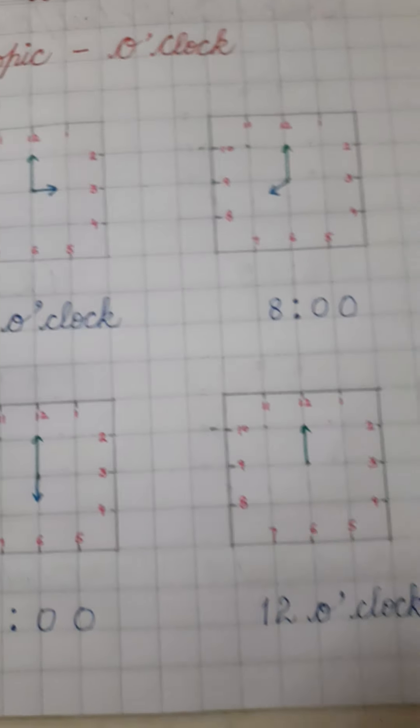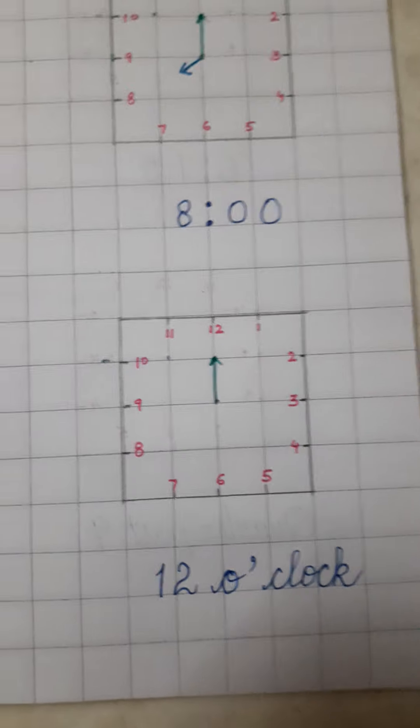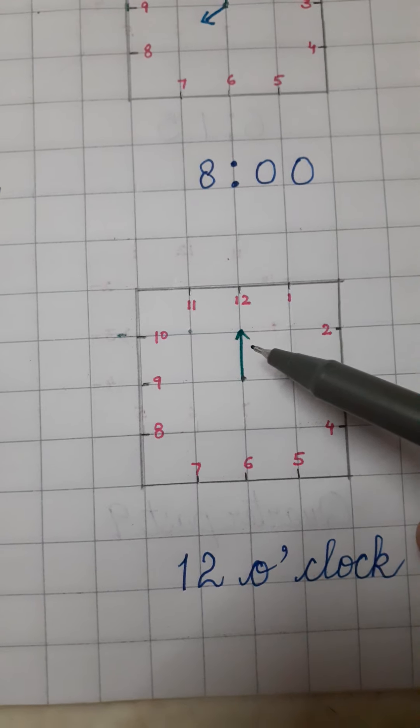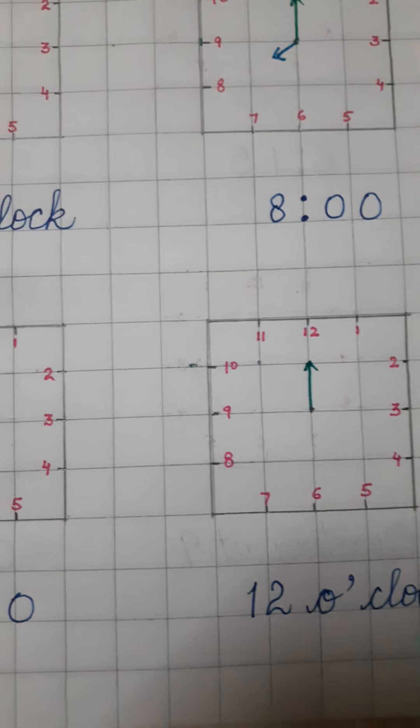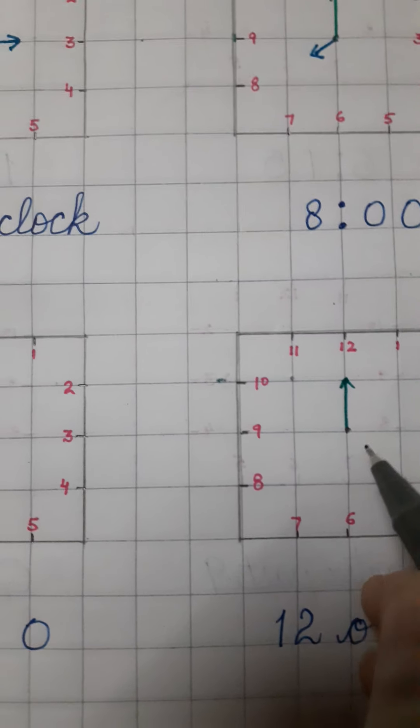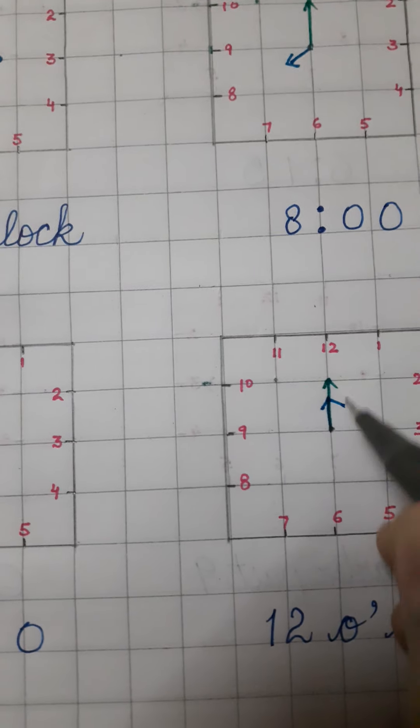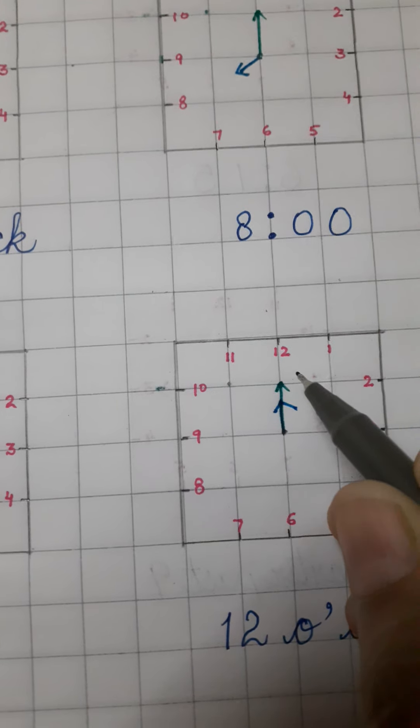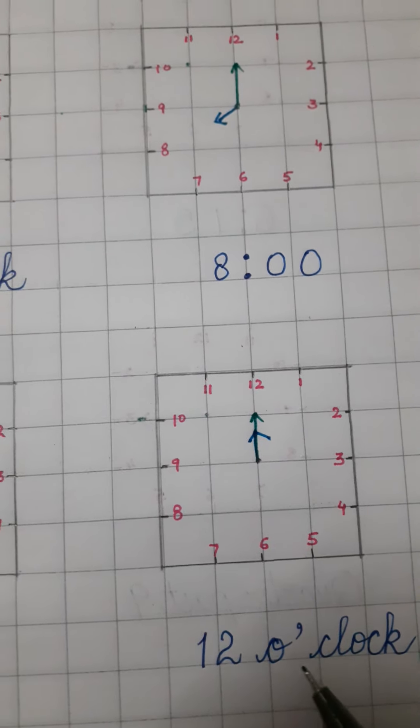Now, the next one. We have to show 12 o'clock. I have drawn the long hand towards the 12. Now, I have to show the hour hand. So, it is 12 o'clock. So, I have to draw the short hand towards the 12. So, both the hands should point towards 12. That is showing now 12 o'clock.